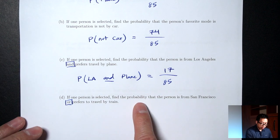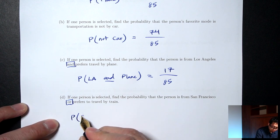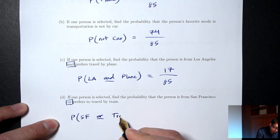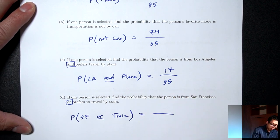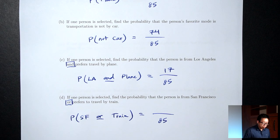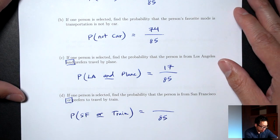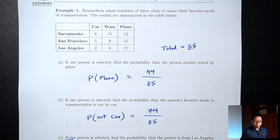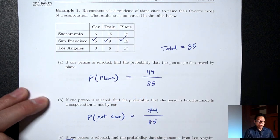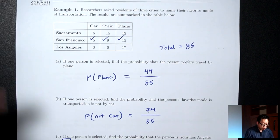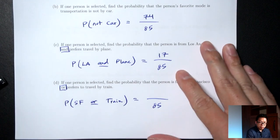Part D: we're looking for probability that the person is from San Francisco or prefers travel by train. In symbols: P(SF or train). Bottom is still 85. The word 'or' means I want people that satisfy one of these requirements or both — they just have to satisfy one. So I take all the San Francisco numbers — 5, 9, 15 — then add on the train numbers not already counted: 15 and 6. The 9 I already counted in San Francisco.